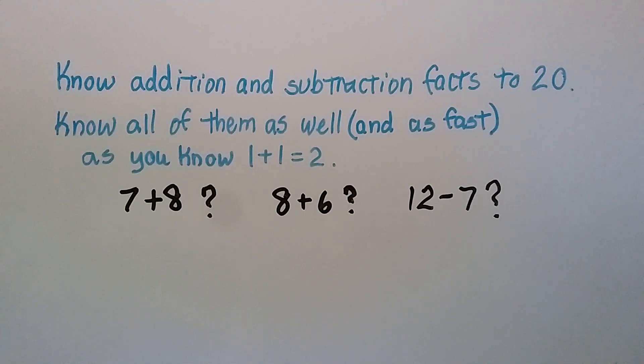So they need to know their addition and subtraction facts to 20 and know all of them as well and as fast as they know 1 plus 1 equals 2. So when I ask you what 1 plus 1 is, you can answer very quickly. Well, that's 2. That's easy. You need to know 7 plus 8 that quickly, 8 plus 6 that quickly, 12 minus 7, and the other addition and subtraction facts to 20. If you do know them, if your student does know them, they will have a very easy time in 2nd grade math and it will prepare them even for 3rd grade math.